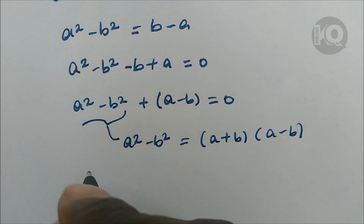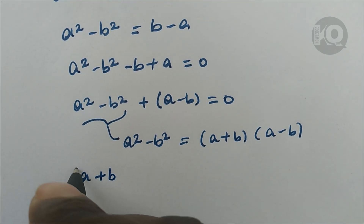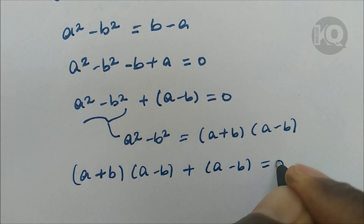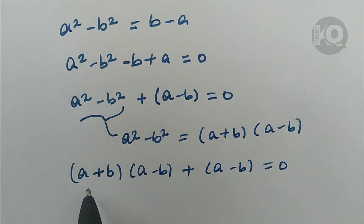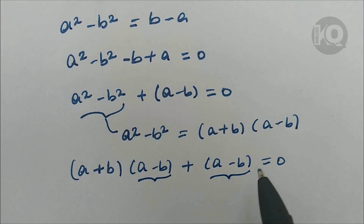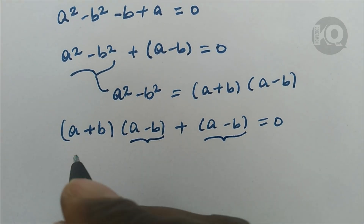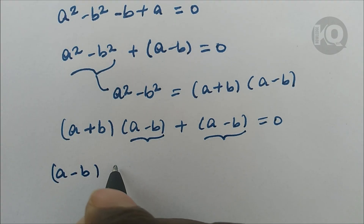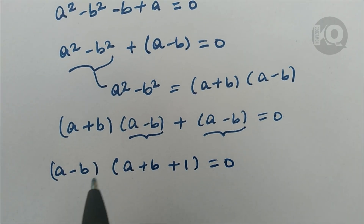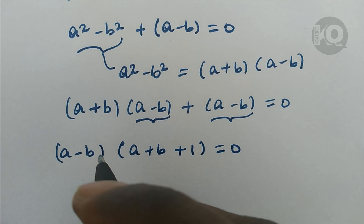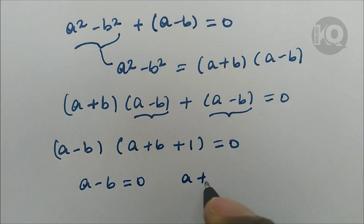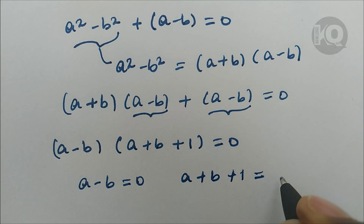Substituting, we get (a plus b)(a minus b) plus (a minus b) equals zero. We can factor out the common term (a minus b), giving (a minus b)(a plus b plus 1) equals zero. By the zero product identity, a minus b equals zero, or a plus b plus 1 equals zero.